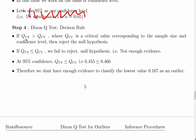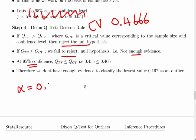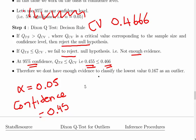The decision rule: is the test statistic greater than the critical value, where CV is 0.466? If yes, reject the null hypothesis; if not, fail to reject. In this case, at 95% confidence, we fail to reject the null hypothesis. We don't have enough evidence to consider the lowest value 0.167 as an outlier.